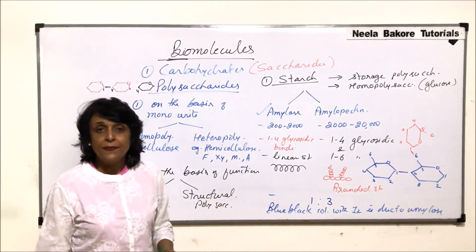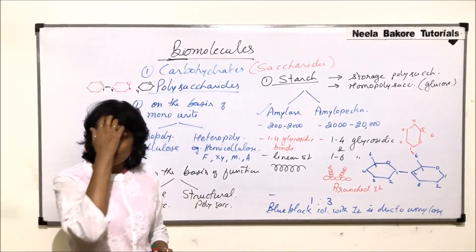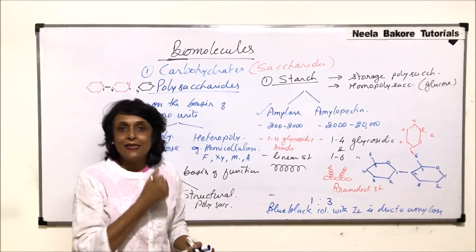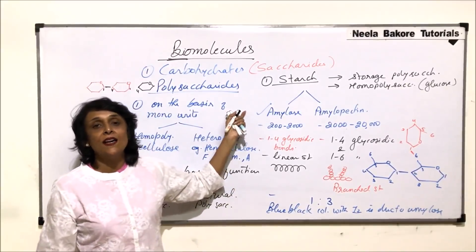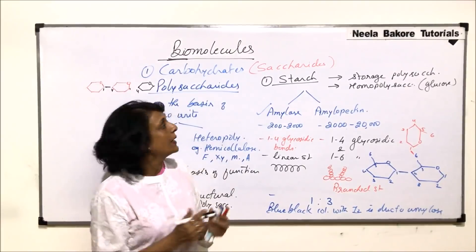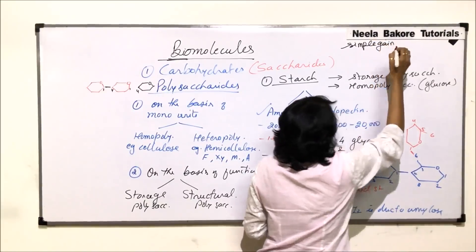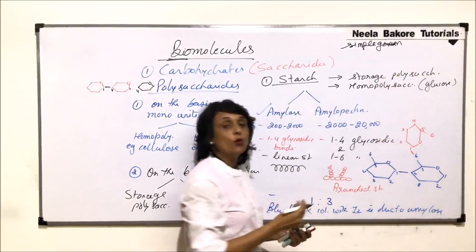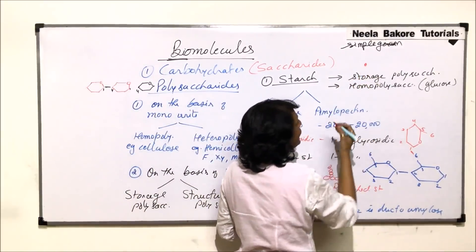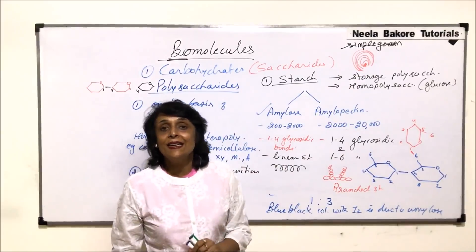Starch is stored in various storage organs or structures such as tubers like potatoes, and grains like rice and maize. The form in which starch is stored is known as a grain. We classify these grains as simple grains or compound grains. A simple grain has only one point, known as the hilum, around which the starch layers are deposited. If there is only one hilum, then the grain is termed a simple grain.